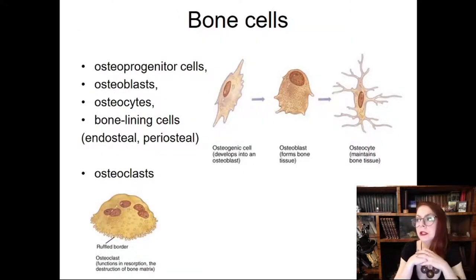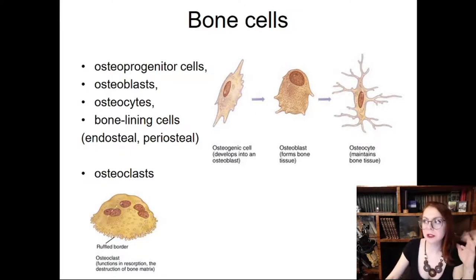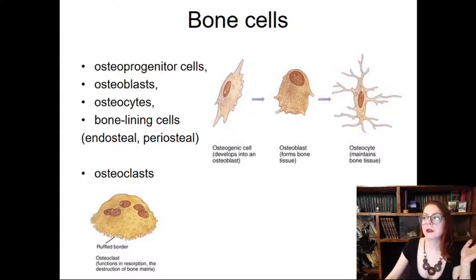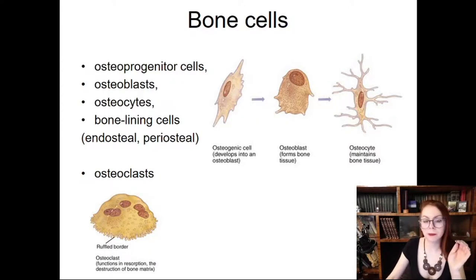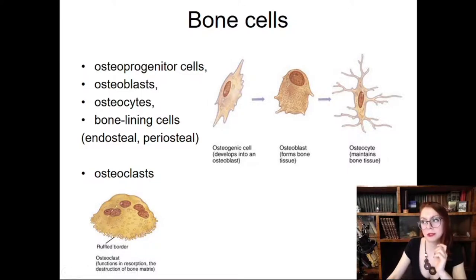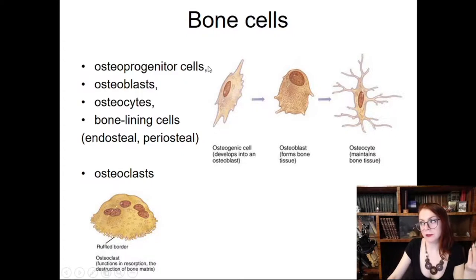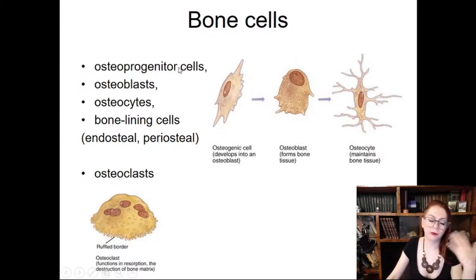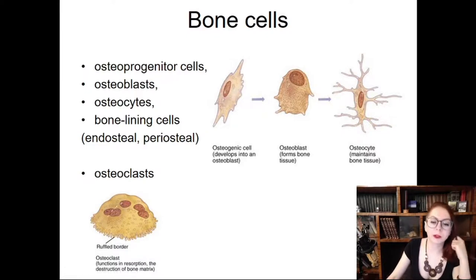After discussing the matrix, we have to discuss cells. There are lots of cells in bone tissue. First, I want to remind you that in connective tissue there is a common precursor for many cells called the mesenchymal stromal or mesenchymal stem cell. This cell can differentiate into osteoblast, chondroblast, fibroblast, or adipocyte. Bone cells derive from the mesenchymal stromal cell, as do chondrocytes and fibroblasts.